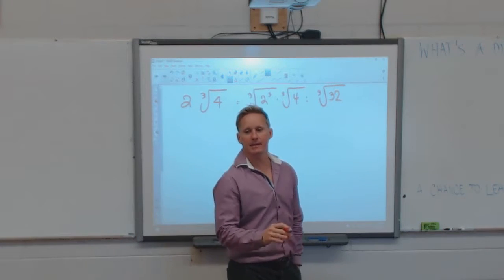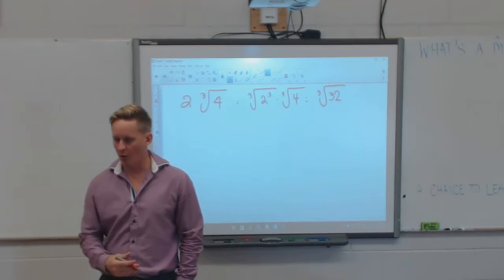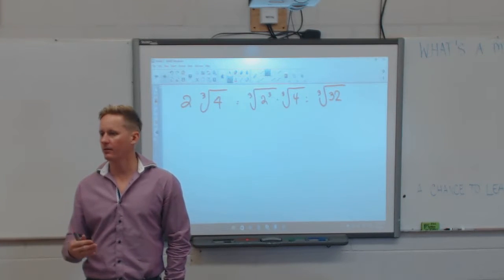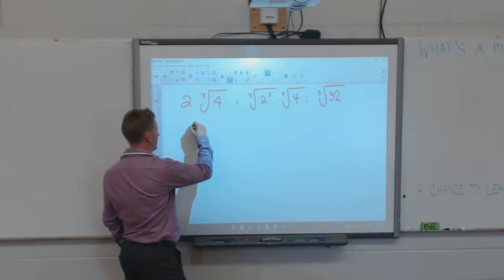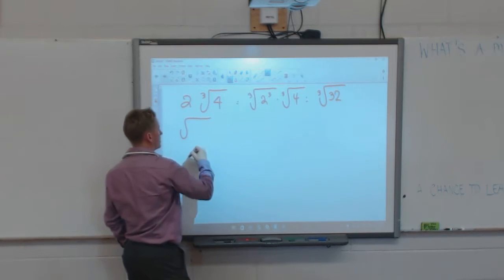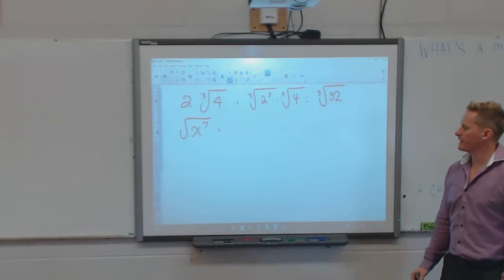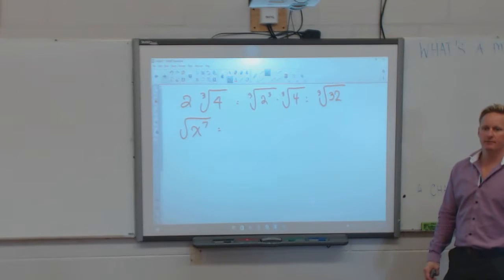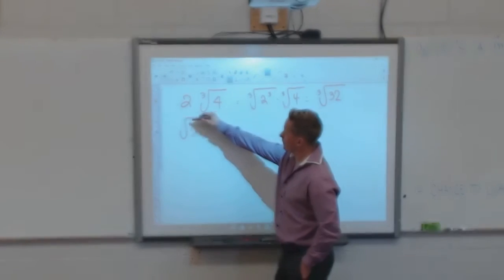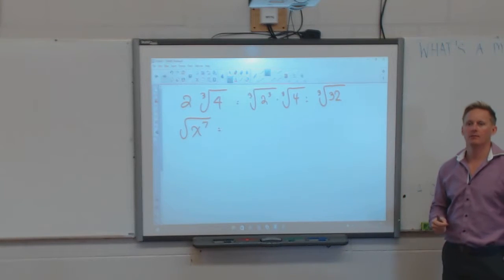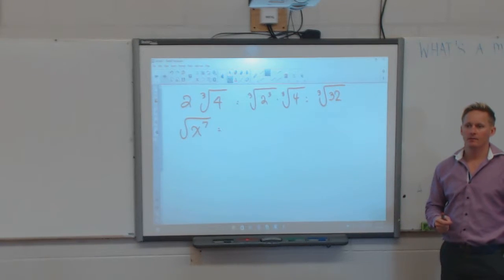Most of you probably didn't struggle much with the converting going back and forth. Where you did struggle is the moment I put variables in there — then it became a little more confusing. So let's look at this example: if I have the square root of x to the 7th and I want to write this as a mixed radical, if I rewrote this square root as an exponent, what is the exponent? It's not negative.